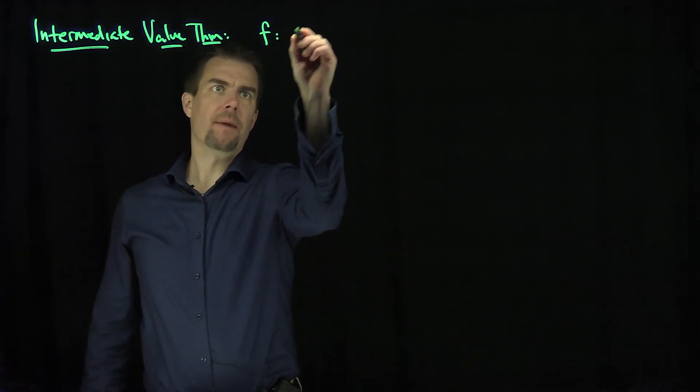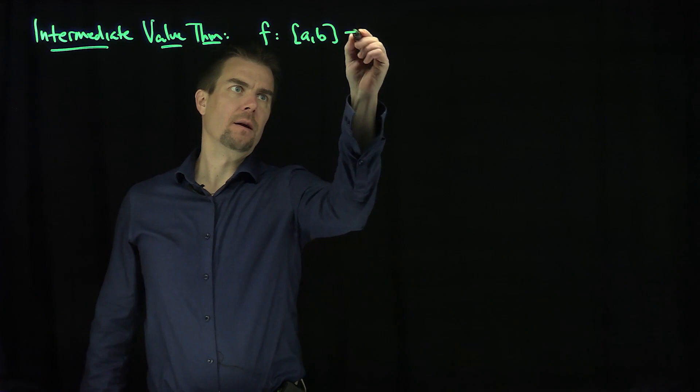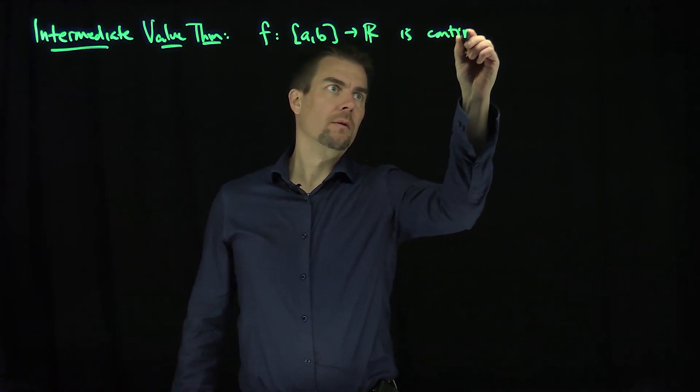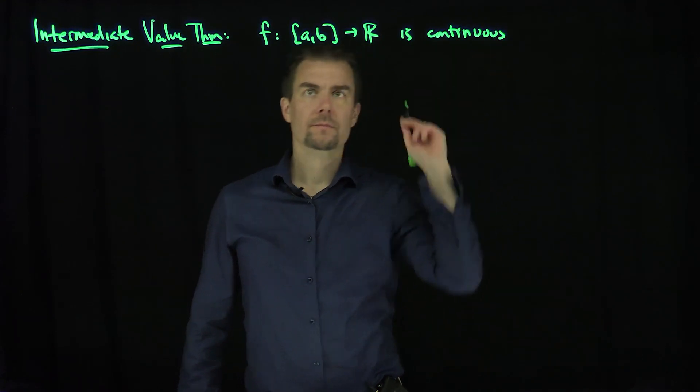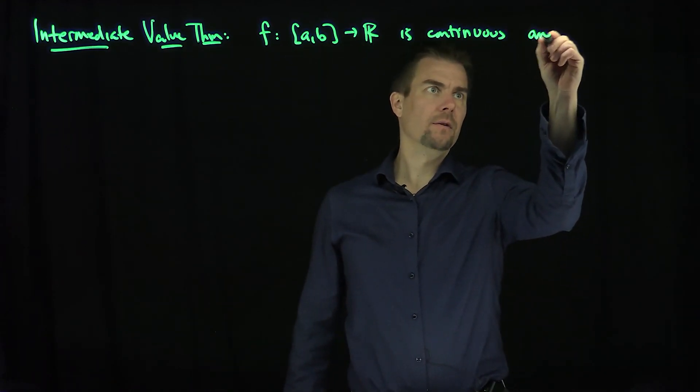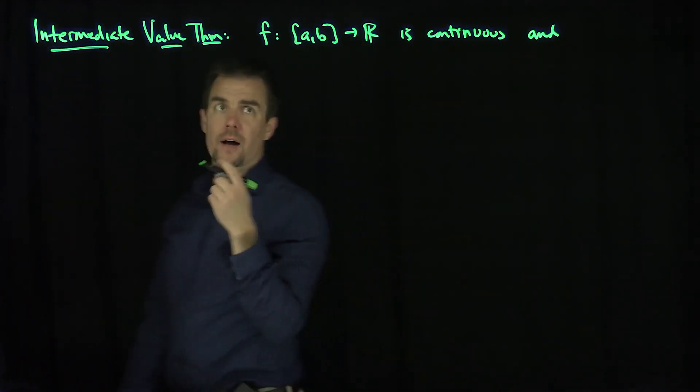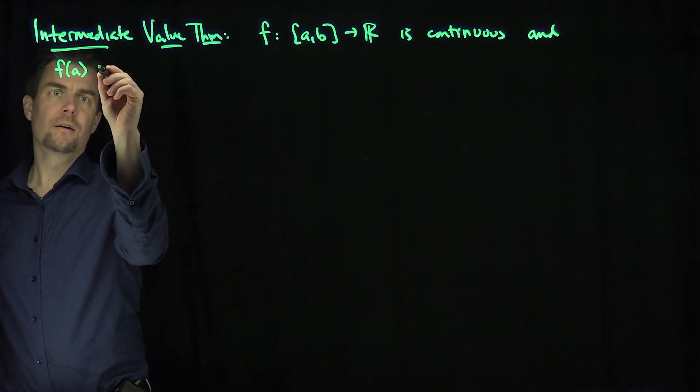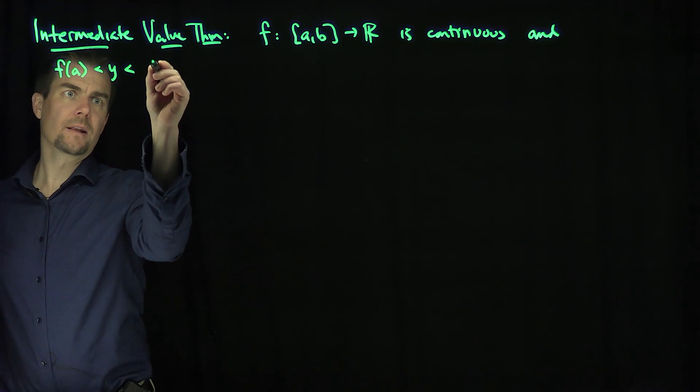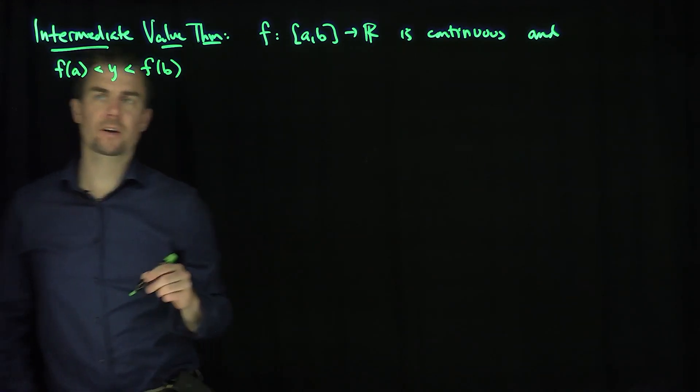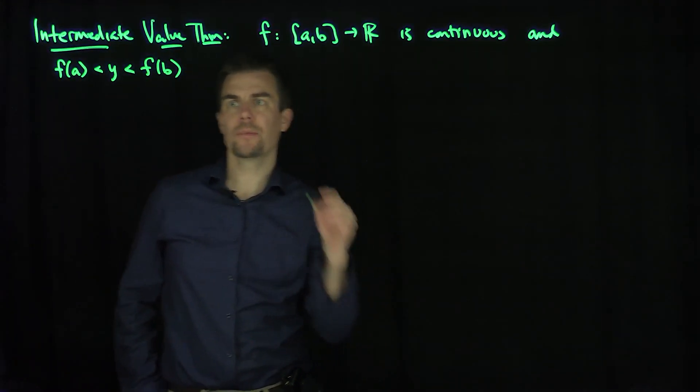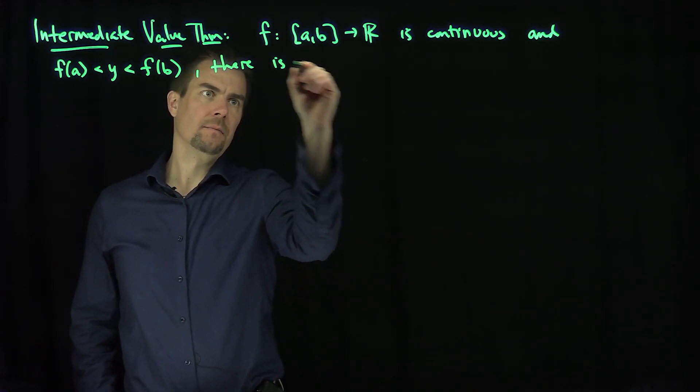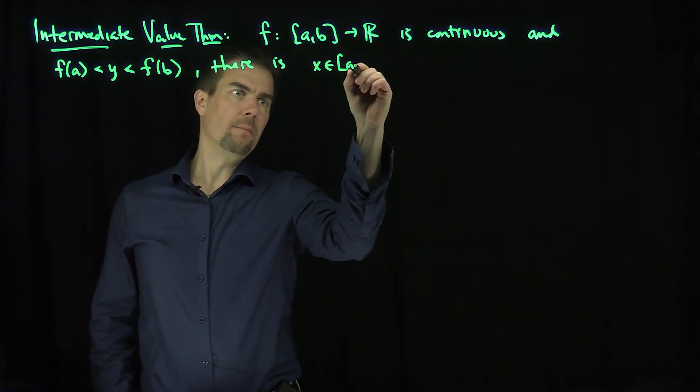It states that if f maps an interval into R is continuous, and y is a value with f(a) less than y less than f(b), so if I can find a value y between f(a) and f(b), then there exists an x in the interval a, b.